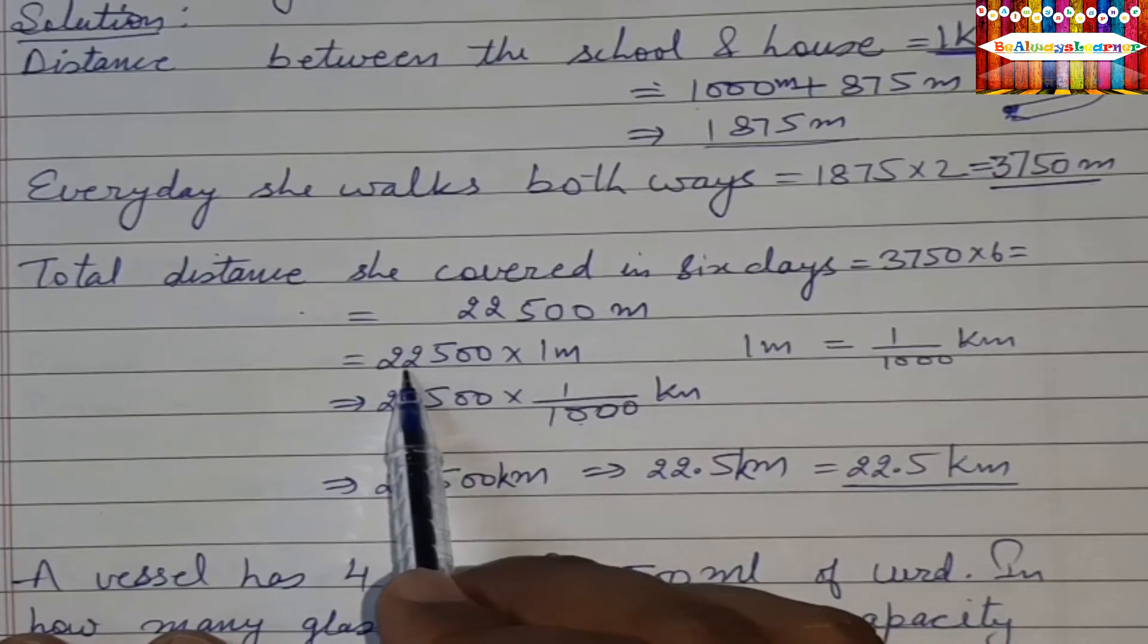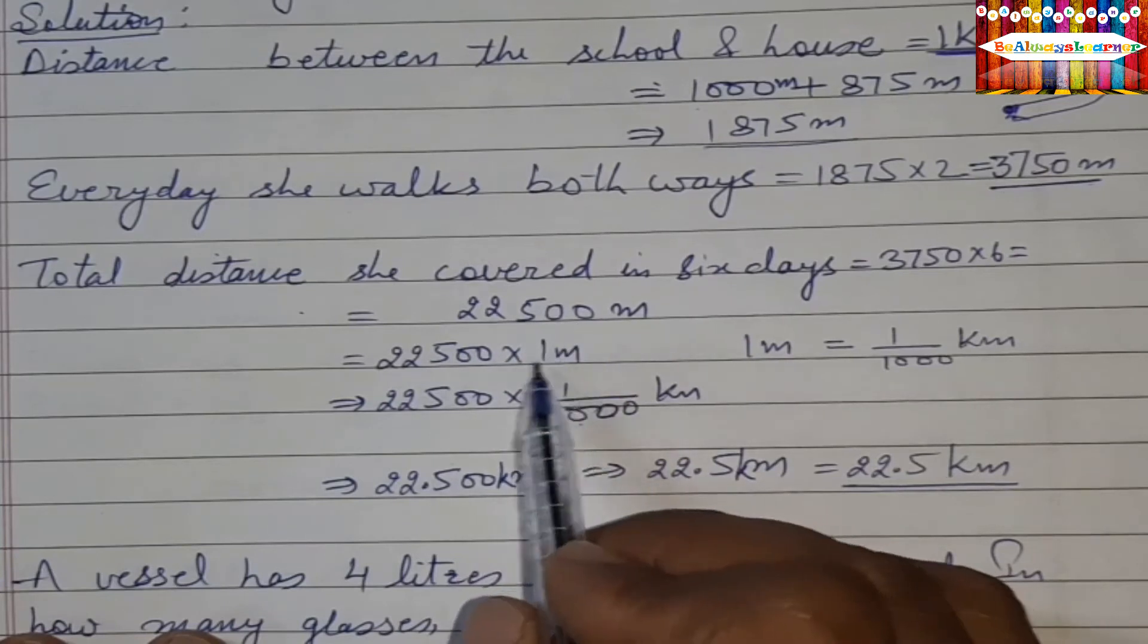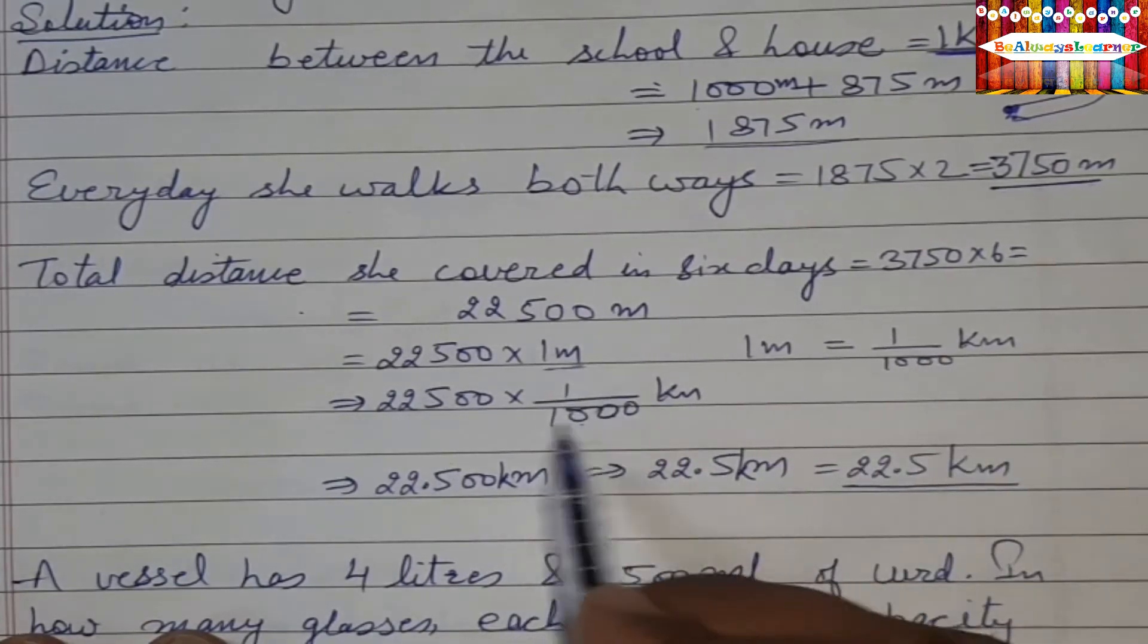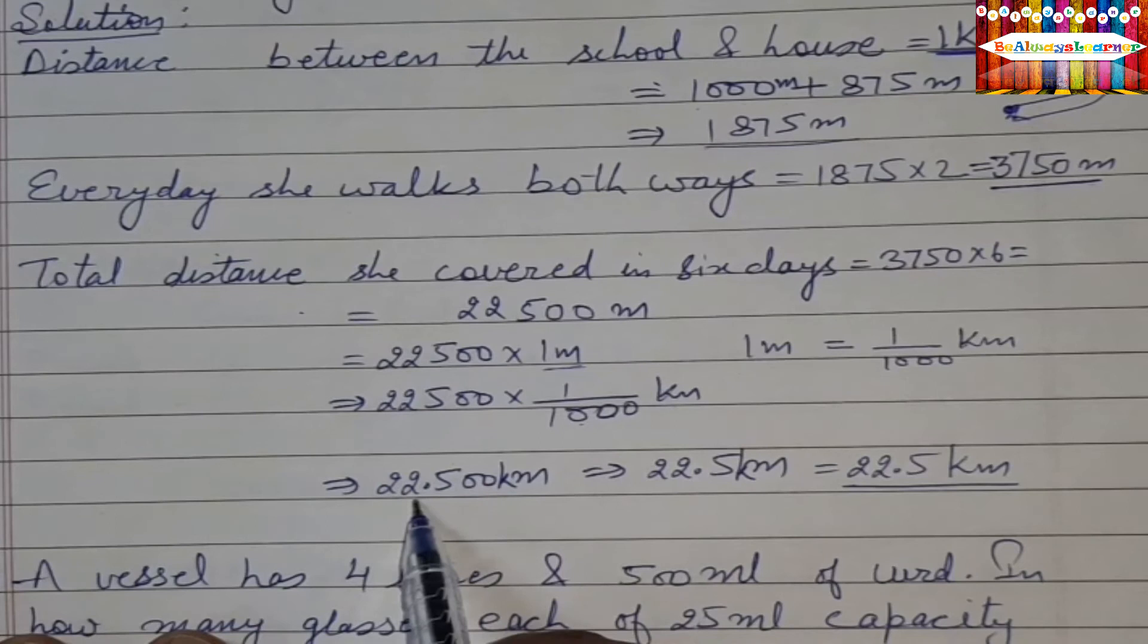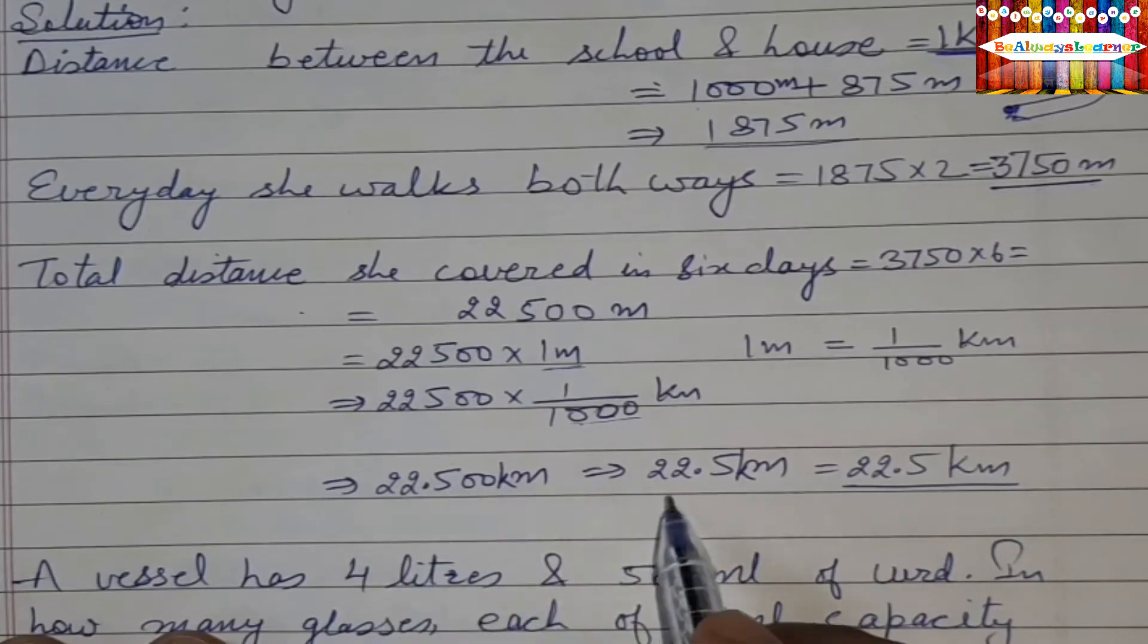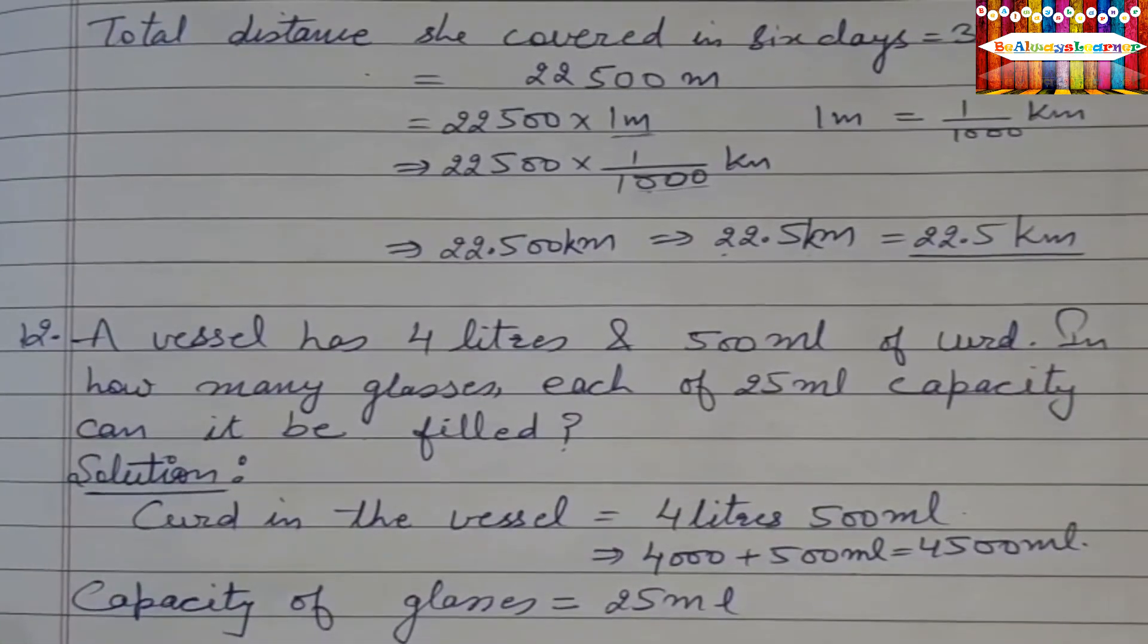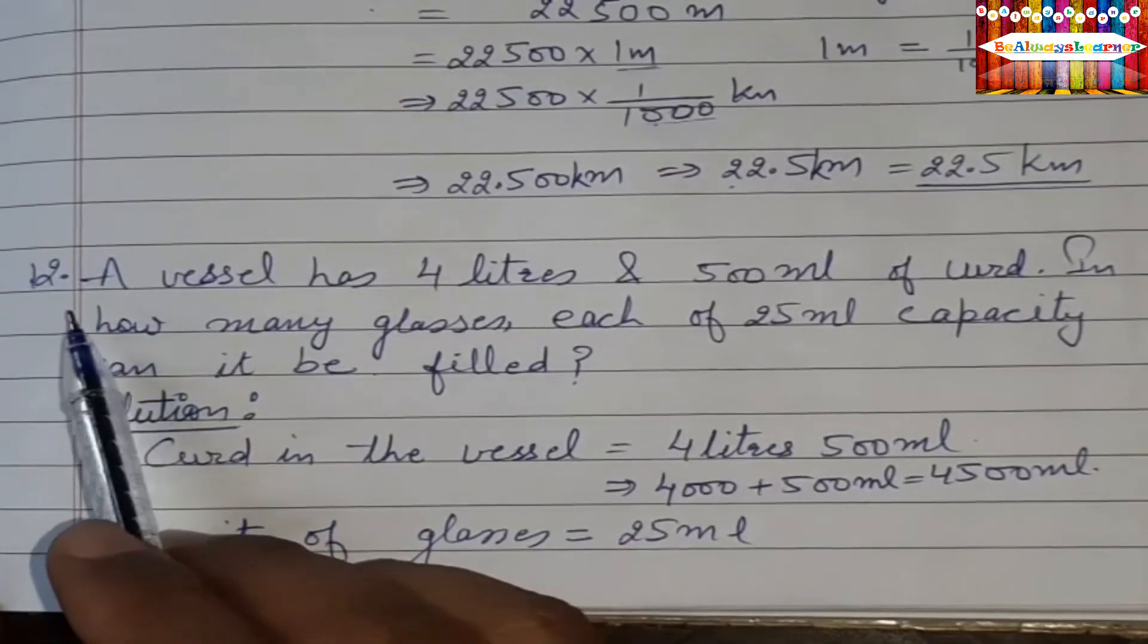Now because we want to represent this digit, because this digit is higher than 1000, so we have 22,500 meters. We want to multiply by 1 by 1000 kilometers. So 1 meter is equal to 1 by 1000 kilometers, so we have 22.5km.